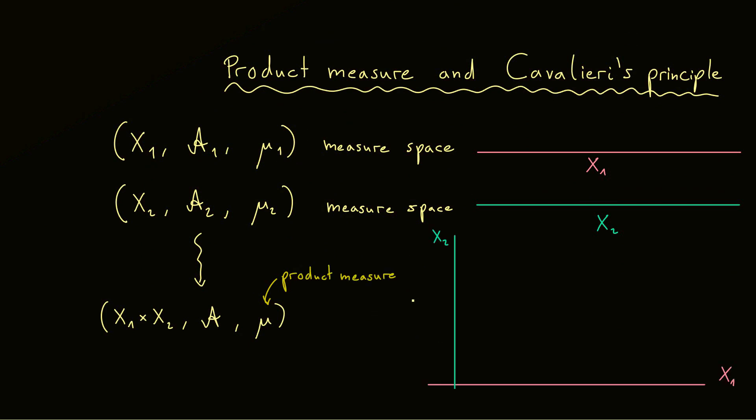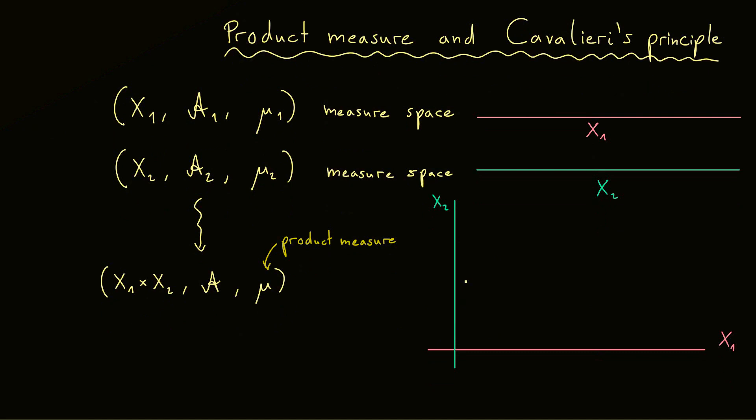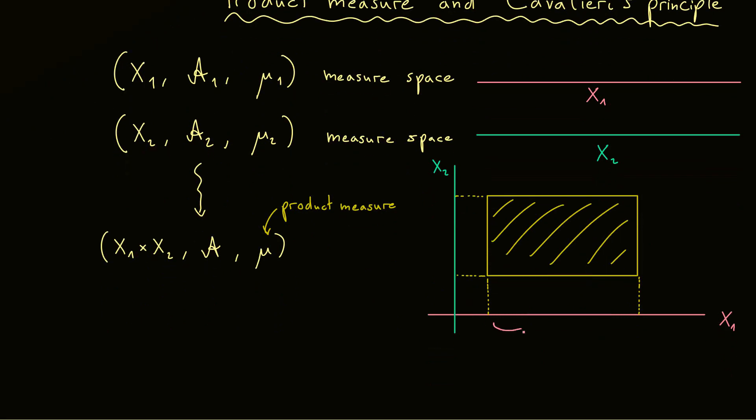Now let's visualize what we want to measure with this new measure mu. Here you see the Cartesian product. Hence a subset where we want to know the volume of lives in this coordinate system. The easiest case would be such a rectangle. And such a rectangle is defined by one subset in X1 and another one in X2. Therefore we can call this one here by A1 and the other one by A2. Hence the rectangle is now given by A1 times A2.